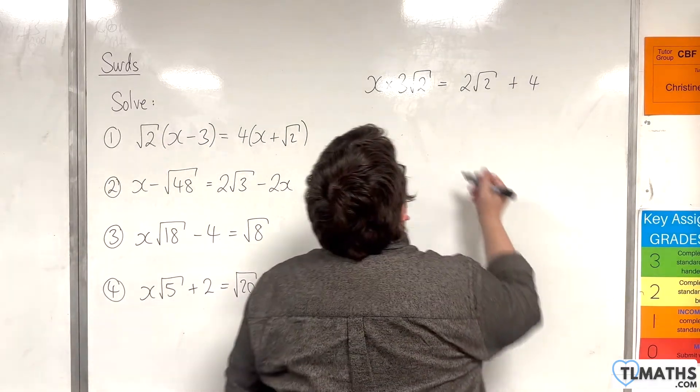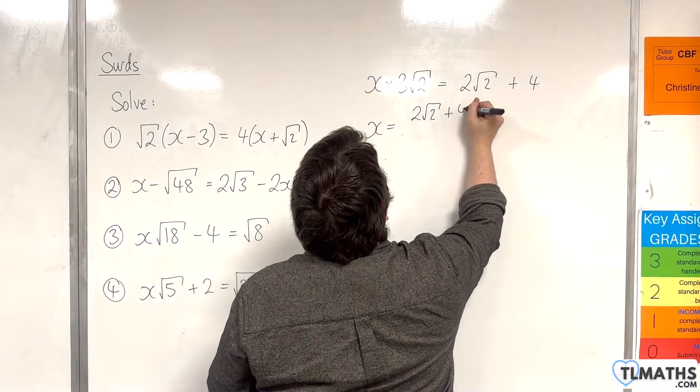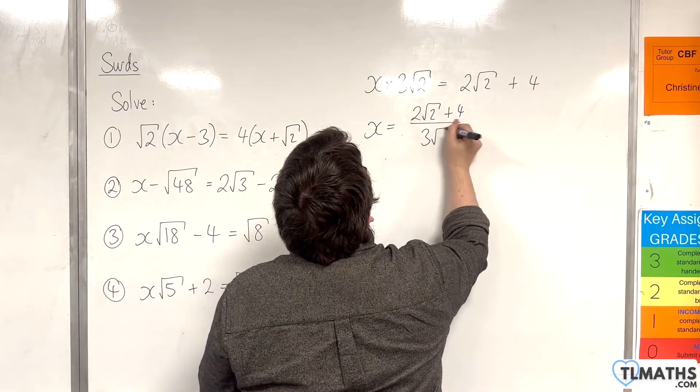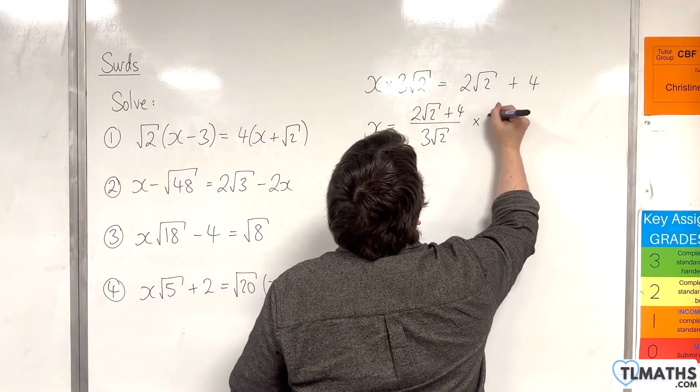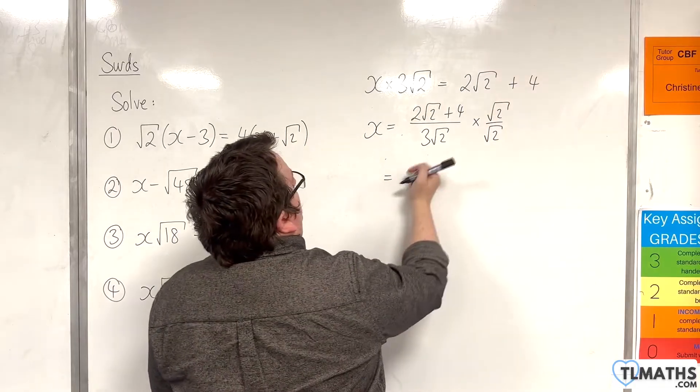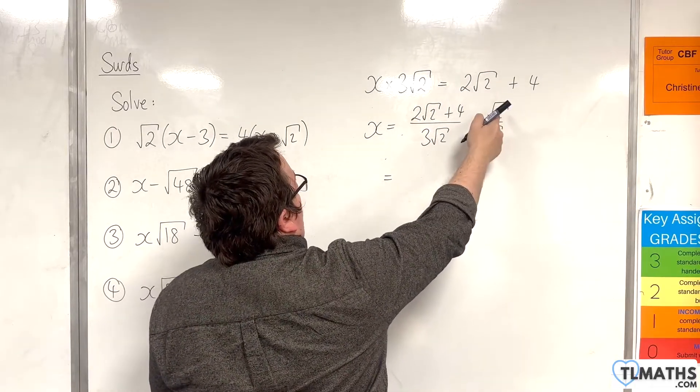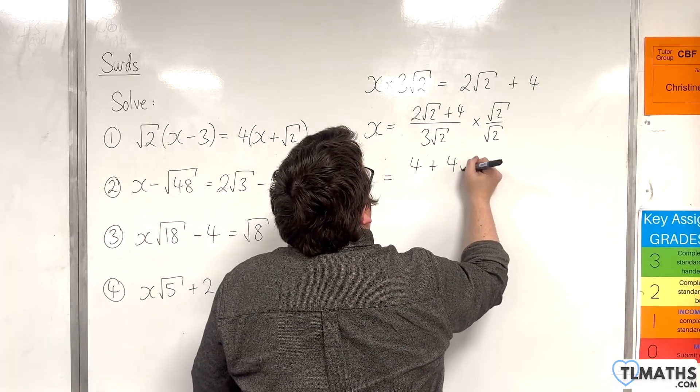So I'll have that. Divide through by the 3 root 2. So x is 2 root 2 plus 4 over 3 root 2. And then I want to rationalize the denominator. I'm going to multiply top and bottom by root 2. So 2 root 2 times by root 2 is 2 times 2, so 4. We're going to get 4 root 2 as well.